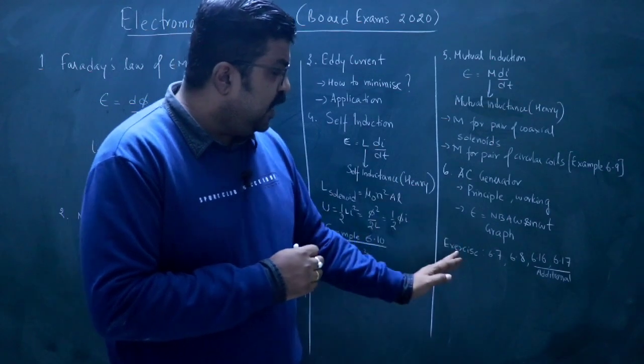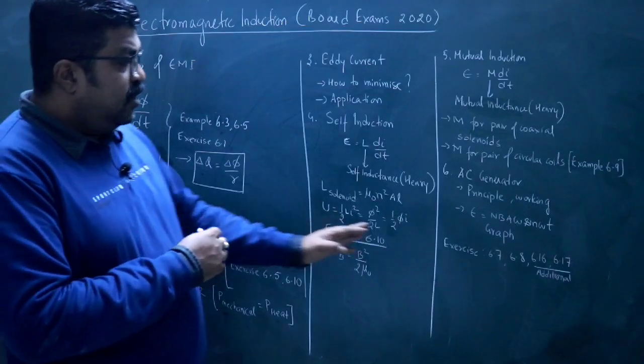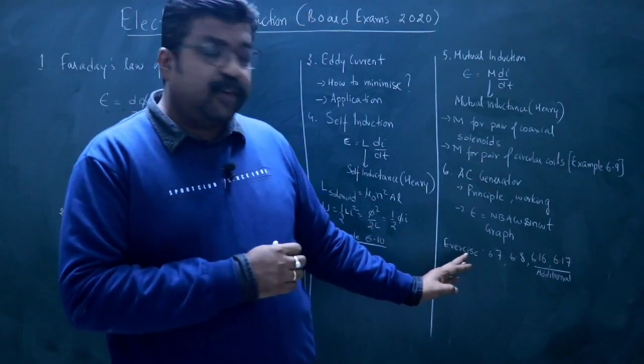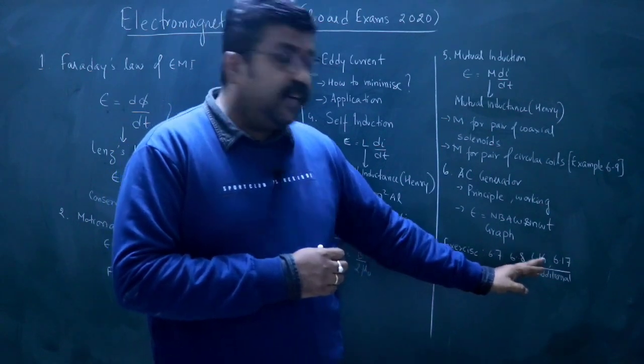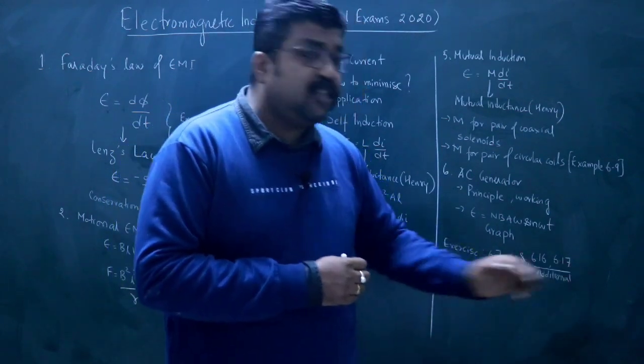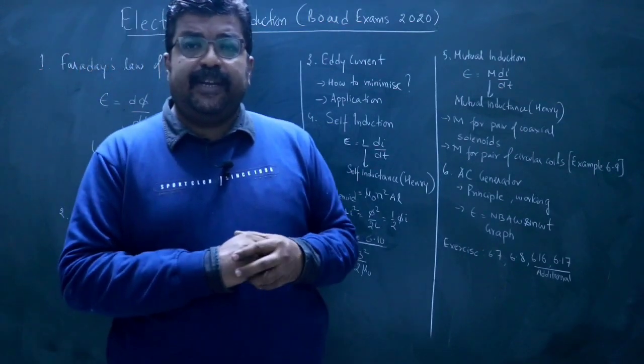So you have to draw a graph in NCERT. In addition to this, the exercise question is the example. I have marked the exercise question. The exercise question is 6.7 and 6.8. And in additional exercise, 6.16 and 6.17. So you have to study this chapter from Electromagnetic Induction so that marks are good.